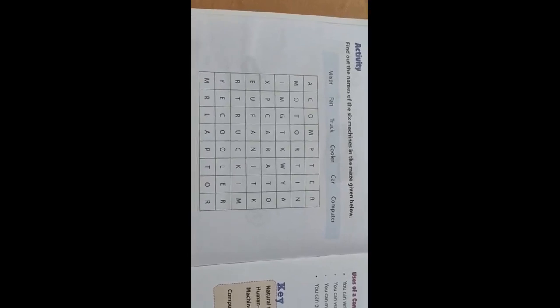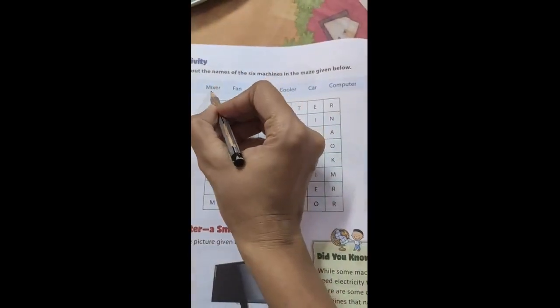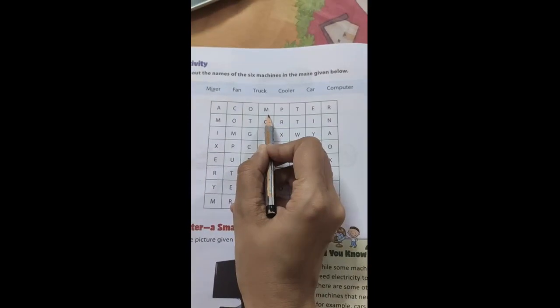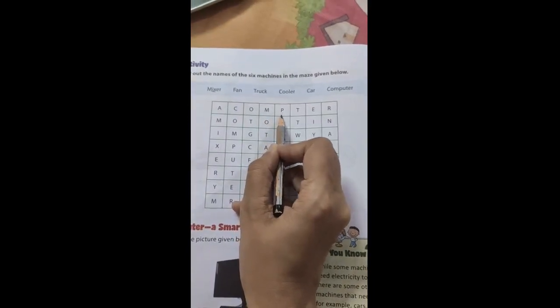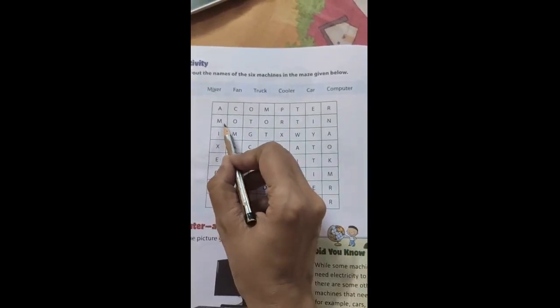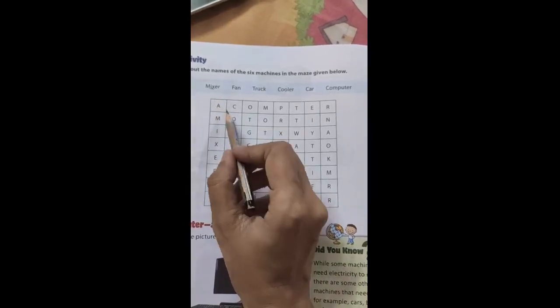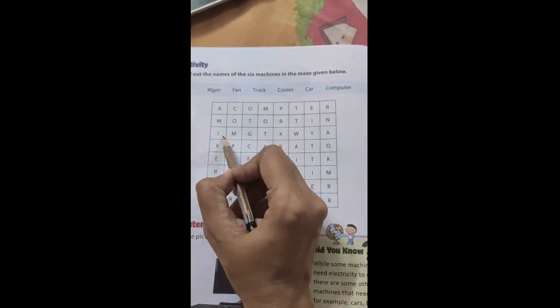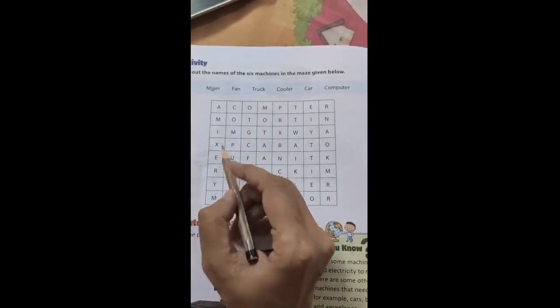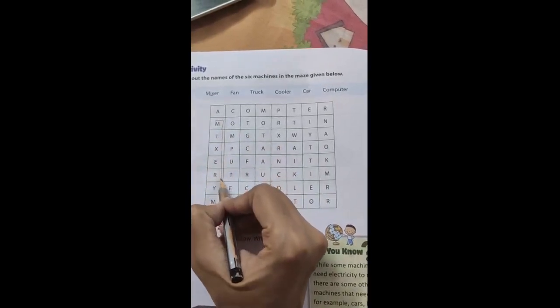Let us try dear children. The very first word is mixer. So let us find M. Here I am getting M, but next I am not getting I. Neither here. Next is in the next row. Yes, I am getting I over here. Next word is O, but I want X. Next is here I am getting. Now full spelling, can we match it? M-I-X-E-R. Yes dear children, we got it. Mixer.